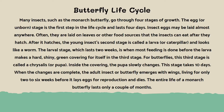After it hatches, the young insect's second stage is called a larva or caterpillar and looks like a worm. The larval stage, which lasts two weeks, is when most feeding is done before the larva makes a hard, shiny green covering for itself in the third stage. For butterflies, this third stage is called a chrysalis or pupa. Inside the covering, the pupa slowly changes. This stage takes 10 days.